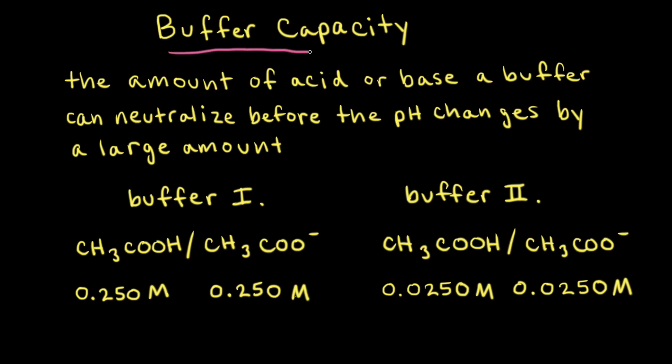Buffer capacity refers to the amount of acid or base a buffer can neutralize before the pH changes by a large amount. An increased buffer capacity means an increased amount of acid or base neutralized before the pH changes dramatically.